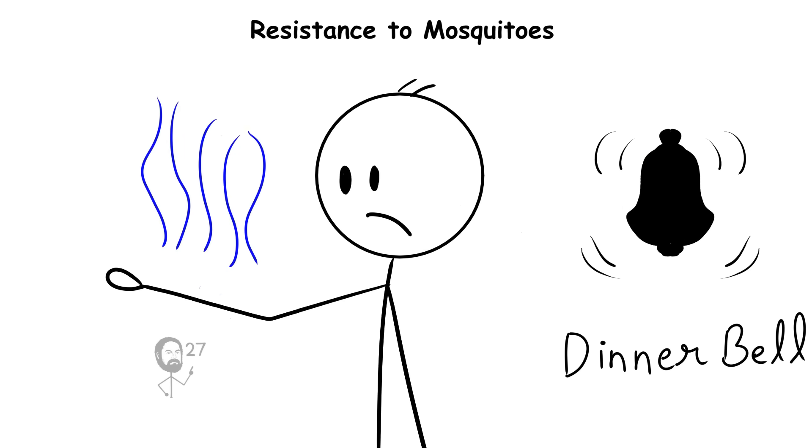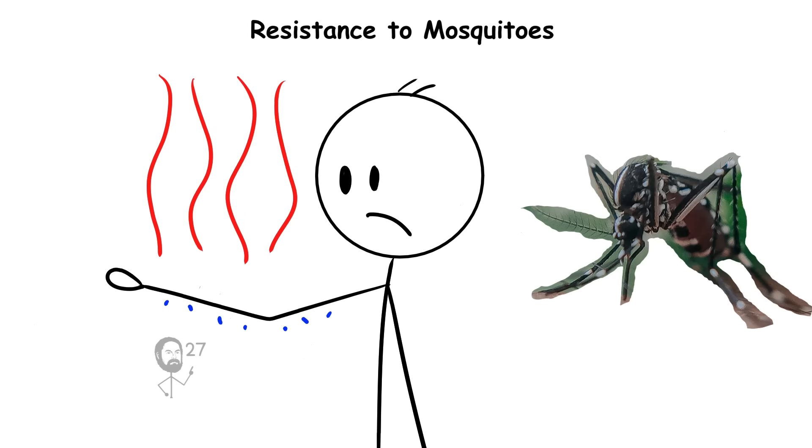Instead of releasing the typical dinner bell chemicals, their bodies produce sweat with a composition that does not trigger the insects' sensors.